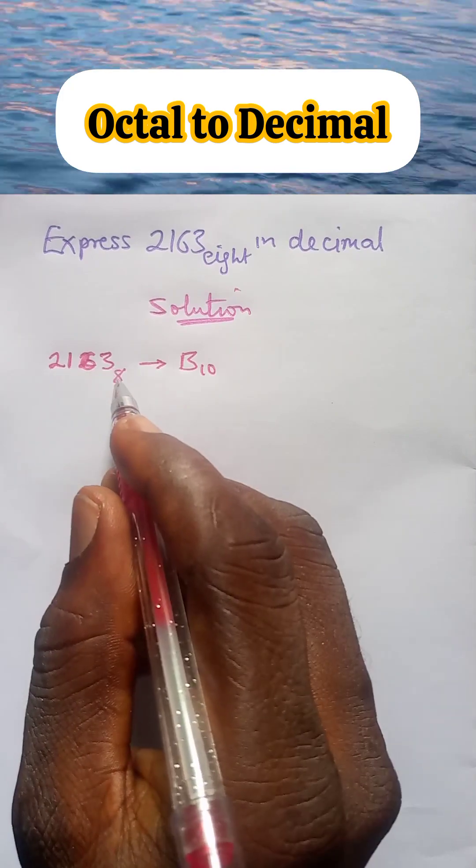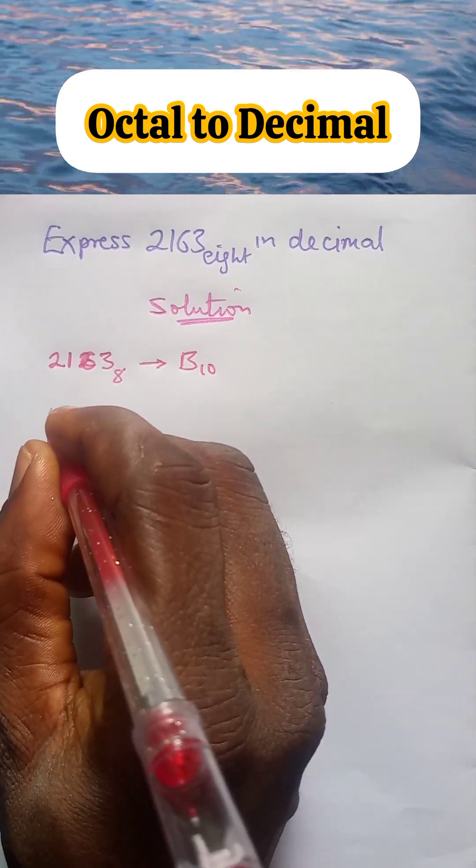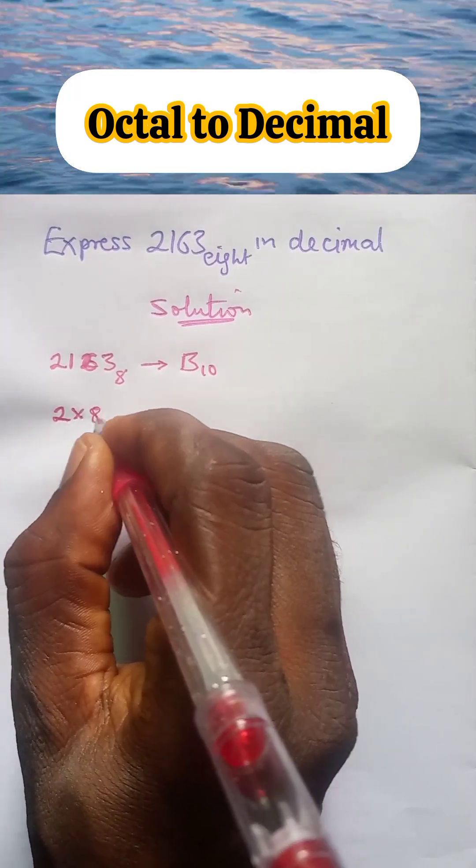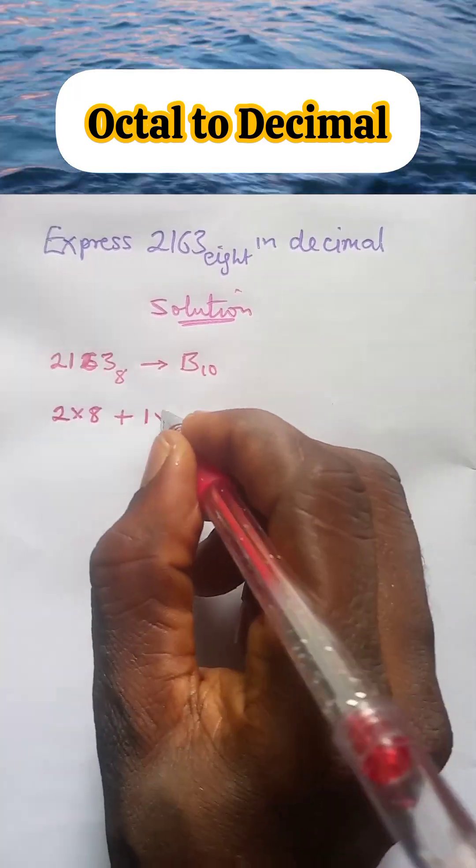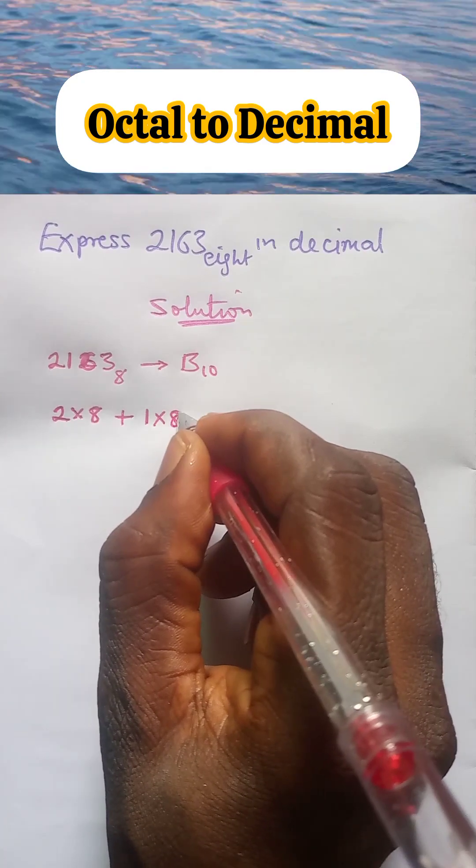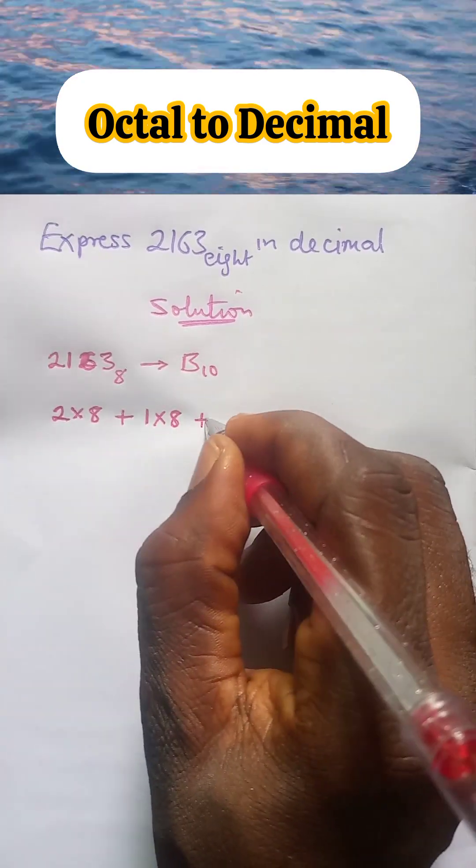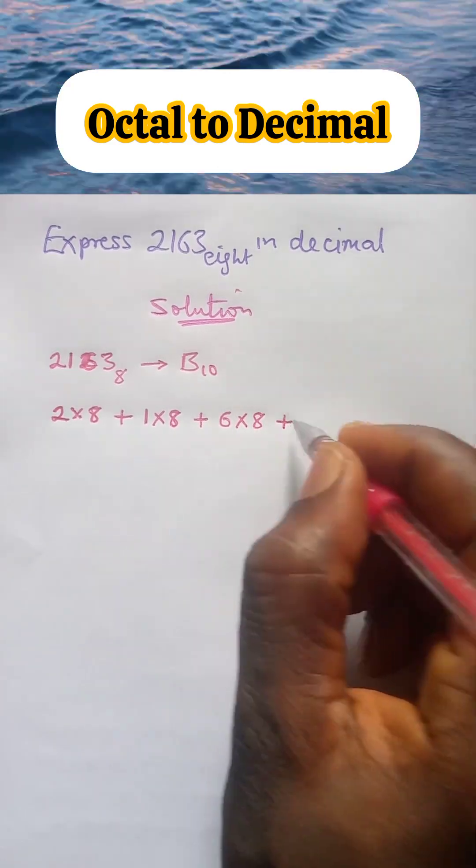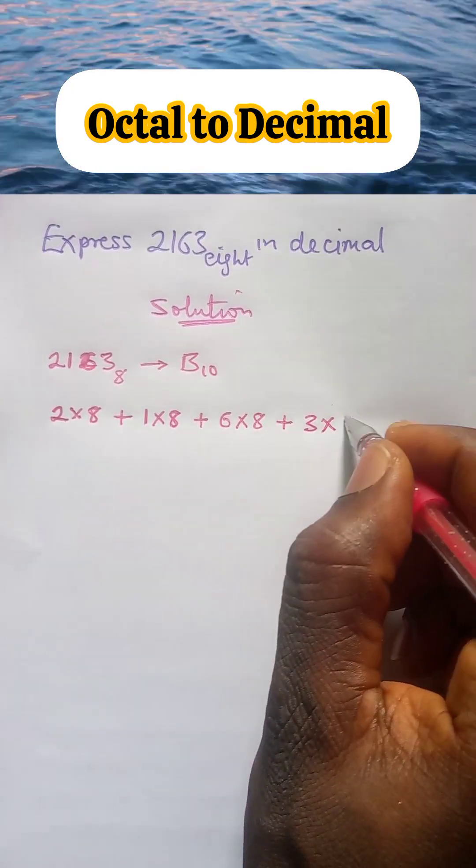So, to convert this to base 10, we start by using each of the digits to multiply 8. So we have 2 multiplied by 8, plus 1 multiplied by 8, plus 6 multiplied by 8, and then plus 3 multiplied by 8.